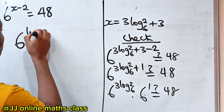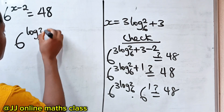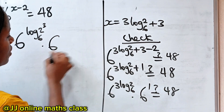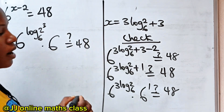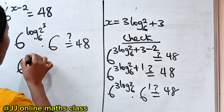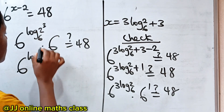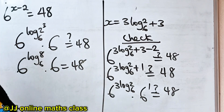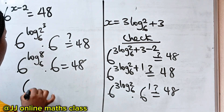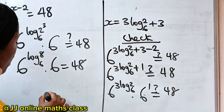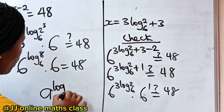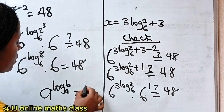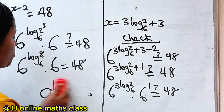We can write this as 6 to the power of log₆2 raised to the power of 3, multiplied by 6 to the power of 1, which is 6. Now recall that when you have A to the power of log base A of B, this is equal to B.